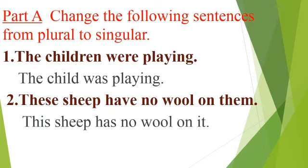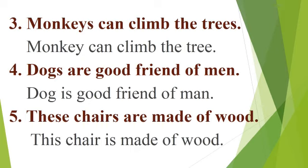Number two — These sheep have no wool on them. You know sheep is used the same in both singular and plural form. So its singular form is: This sheep has no wool on it. We have converted all the sentences to singular form.